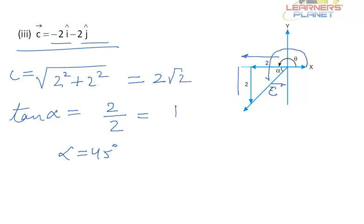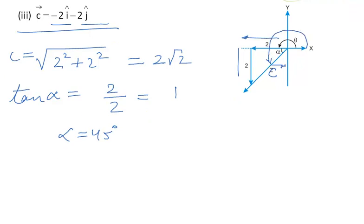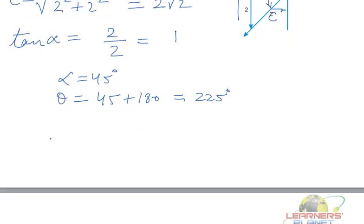Now if you wish to find out the angle theta from this point to this point, then the value of theta will be equal to 45 plus 180 which is 225. So you will write the magnitude of c as 2 root 2 units making an angle of 225 degrees with x axis.